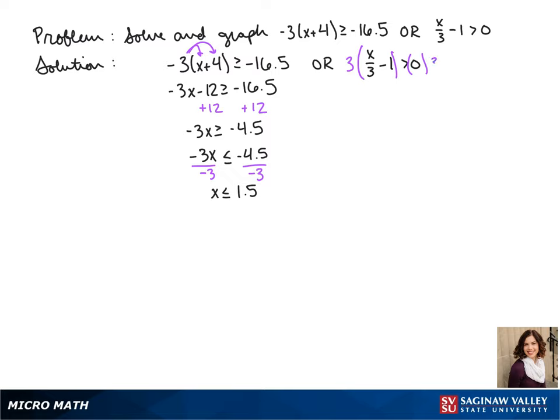On the other part of our inequality, to get rid of the fraction we multiply both sides by 3. So we get x - 3 > 0. To get x by itself we just add 3 to the other side. So our final answer is x ≤ 1.5 or x > 3.